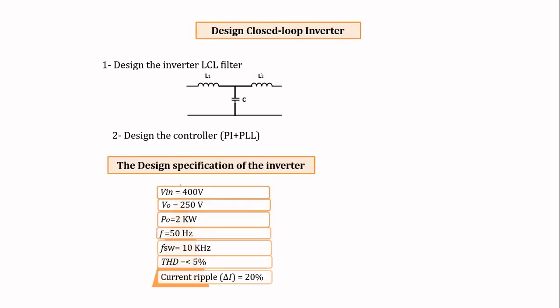Before proceeding with the design, we have to know the required design specifications of the grid-connected inverter. In our design: input voltage is 400 V, output voltage is 250 V, output power is 2 kW, output frequency is 50 Hz, switching frequency is 10 kHz, total harmonic distortion less than 5%, and current ripple 20%.